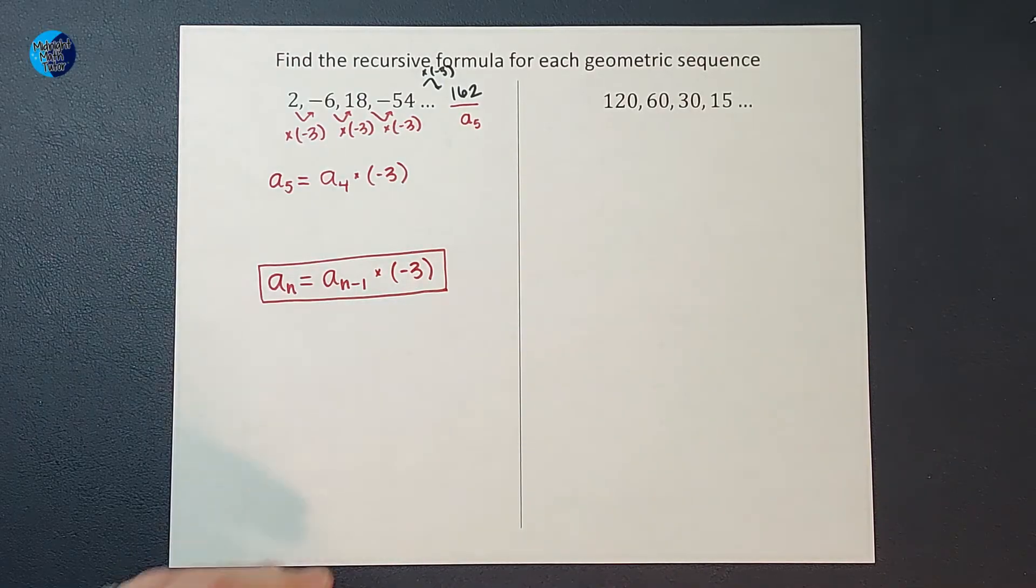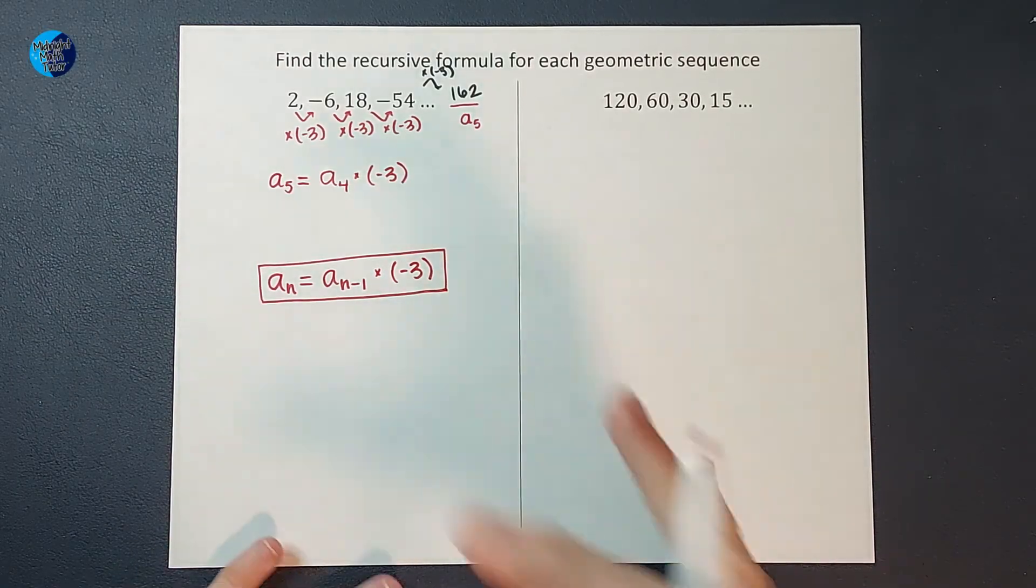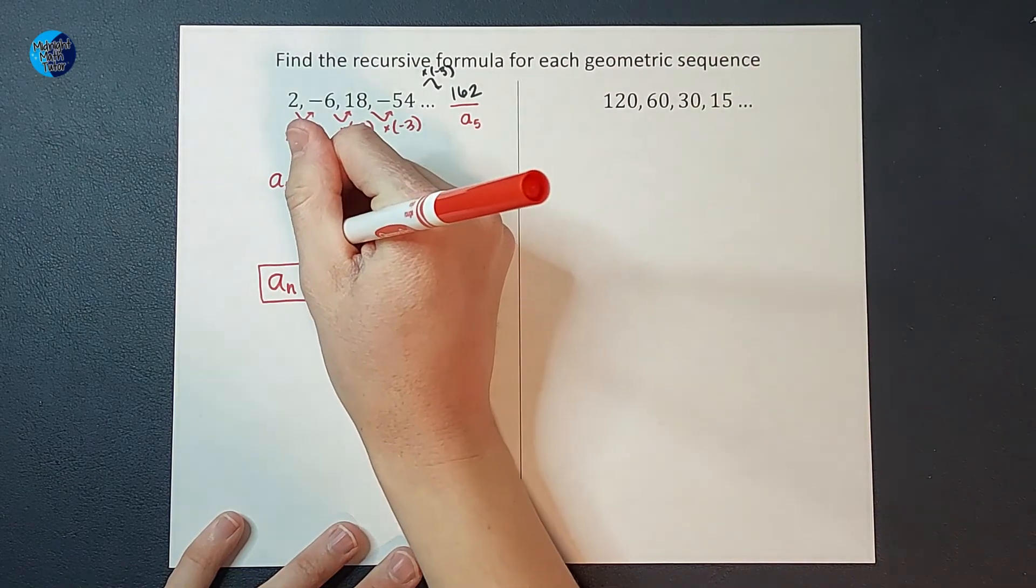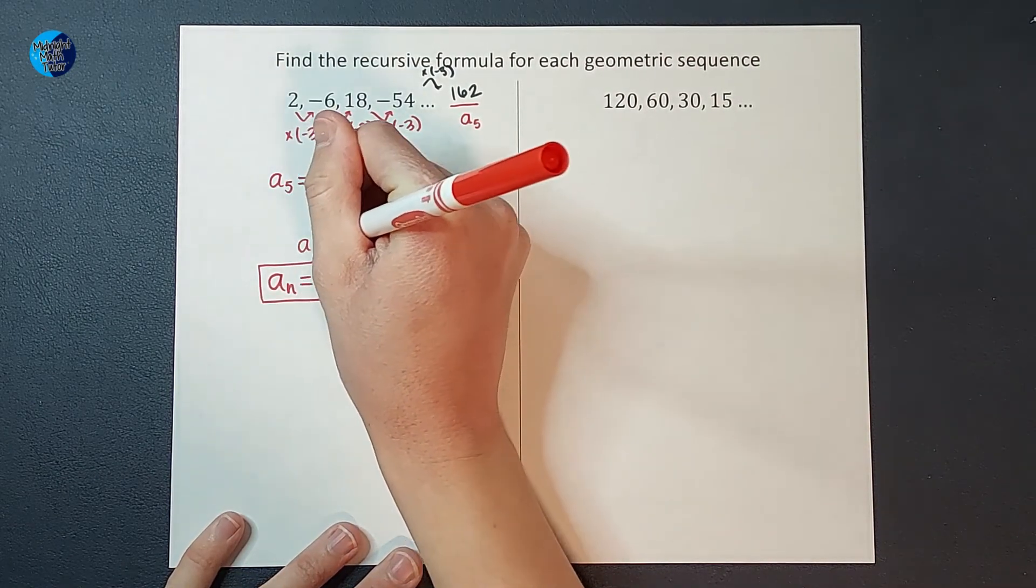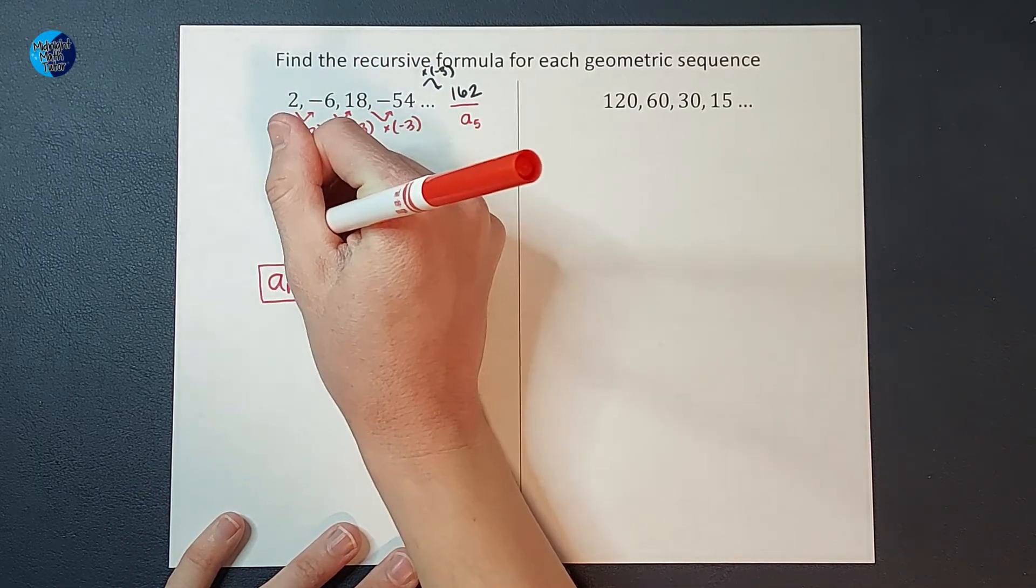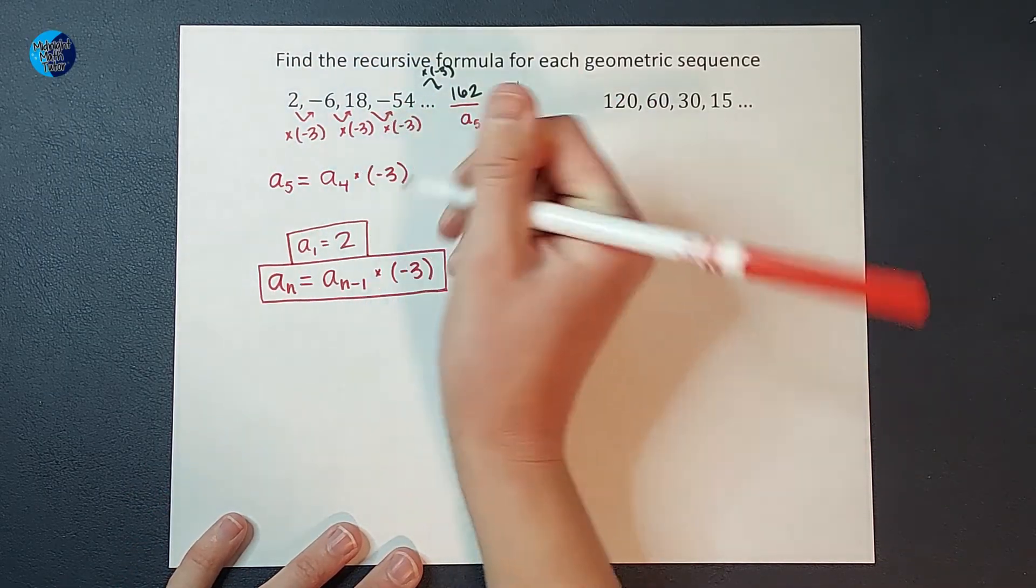Now in order for this to be helpful for anybody using it, we need to let them know what the first term in our sequence is. So we say A sub 1 in this sequence is equal to 2. All right, isn't that beautiful?